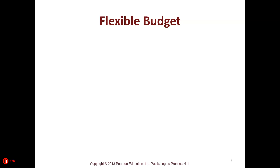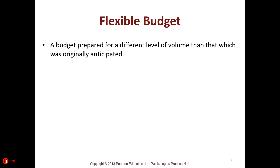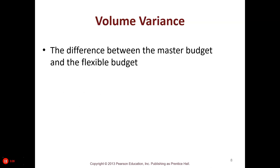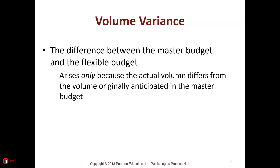Now we're going to look at flexible budgets. A flexible budget is a budget prepared for a different level of volume than originally anticipated. The master budget variance is the difference between actual revenues and expenses and the master budget. However, you can't make that comparison directly because within the actual and master budget are variances due to different volume and variances due to other factors. The volume variance is the difference between the master budget and the flexed budget — for example, what would the budget have looked like if the master budget had 100,000 units but actual was 150,000? It arises only because actual volume differs from the volume originally anticipated.